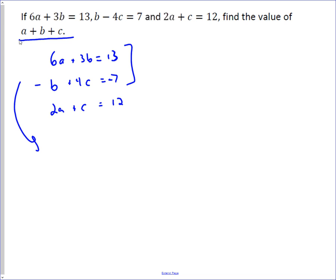And when I do that, I get 6a, plus 2b, because I do 3b minus b, and then plus 4c equals 6.